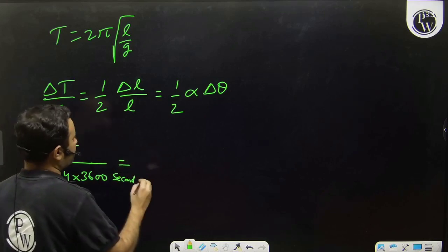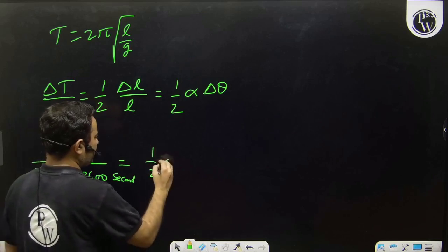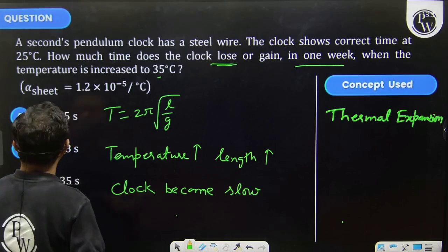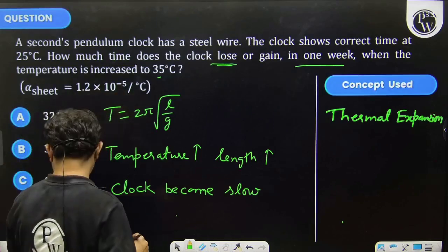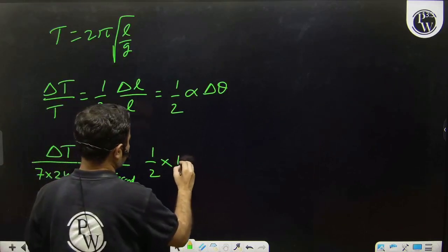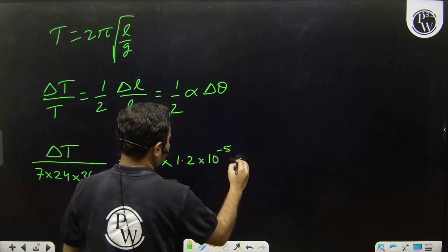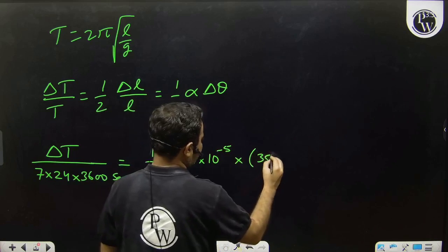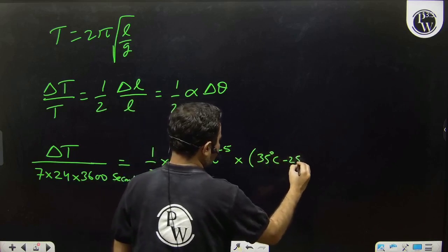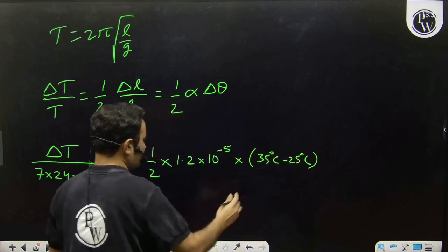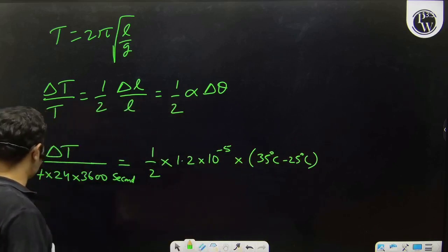Equals (1/2) × α. What is the value of alpha? 1.2 × 10⁻⁵. What is the temperature change? 35°C - 25°C, so this will come out as 10. When